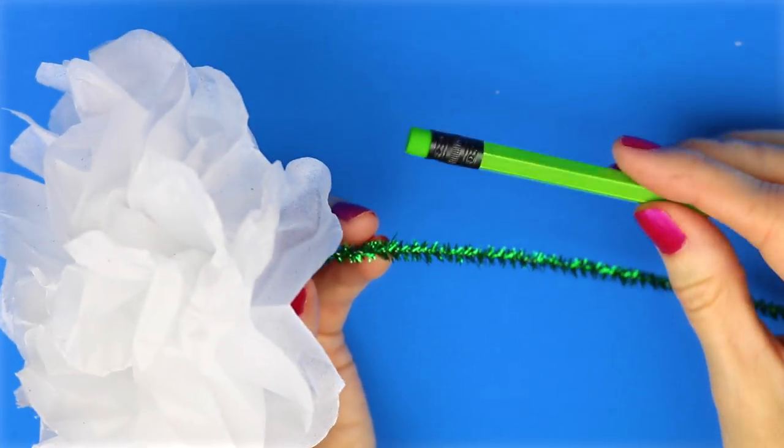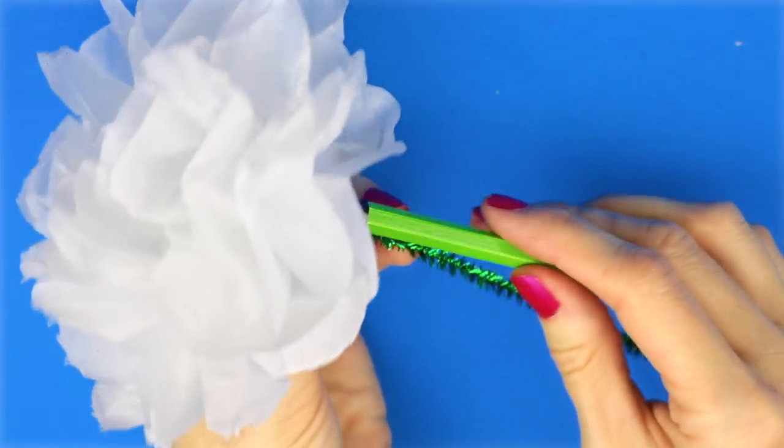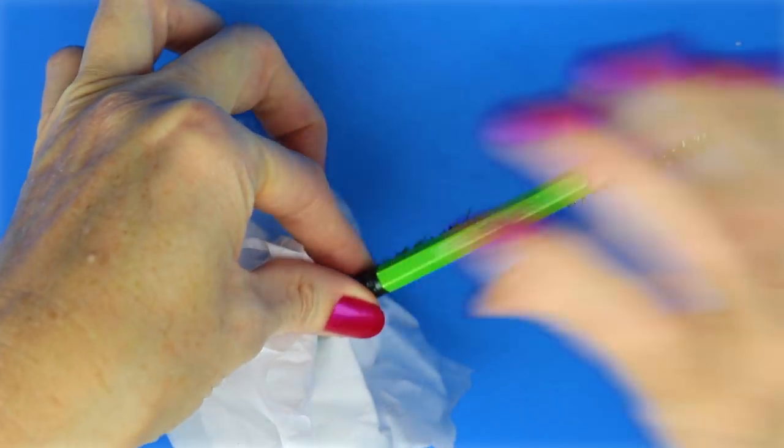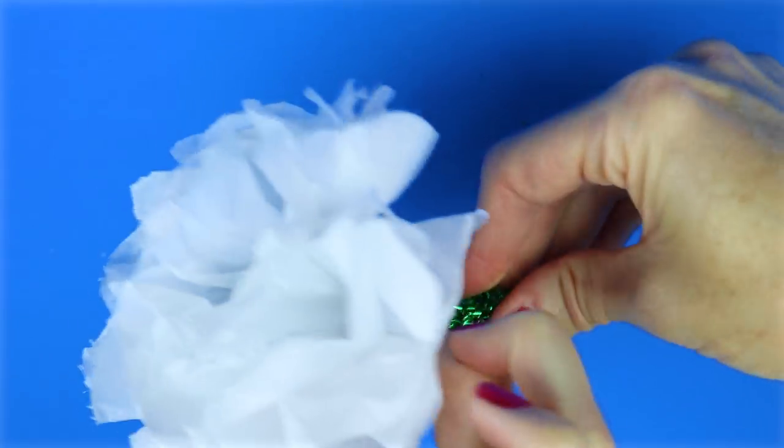I wrapped the pipe cleaner around a mini pencil. And then I stuck it into the sand. I know that the flower doesn't really look super close to whipped cream, but it's just a really cute and fun DIY project.